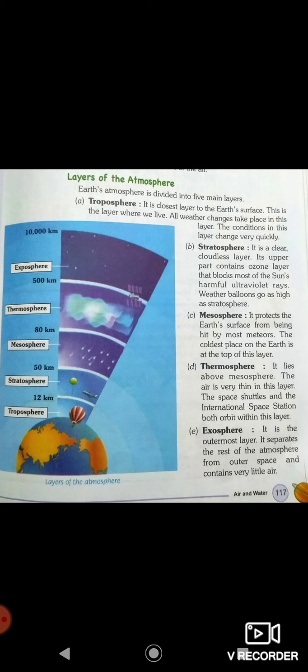Next is stratosphere. It is a clear, cloudless layer. Its upper part contains ozone layer. What is ozone layer? The ozone layer protects us from the sun's ultraviolet rays. Weather balloons go as high as the stratosphere.